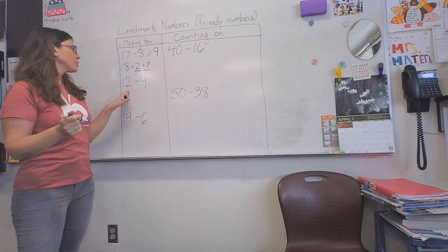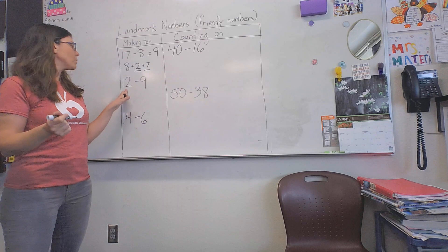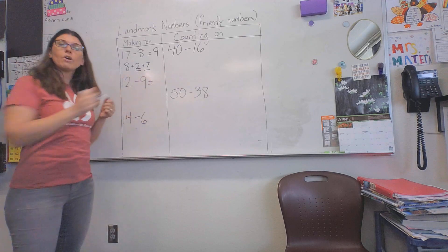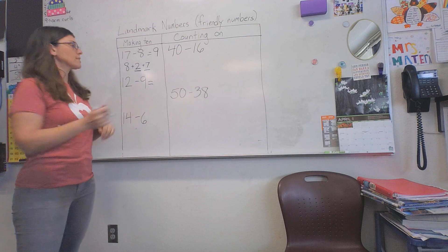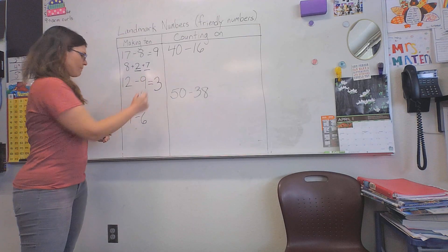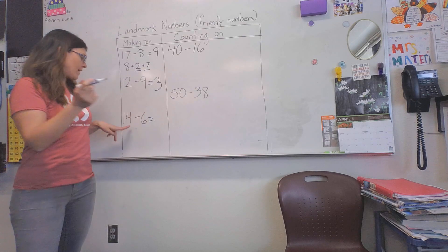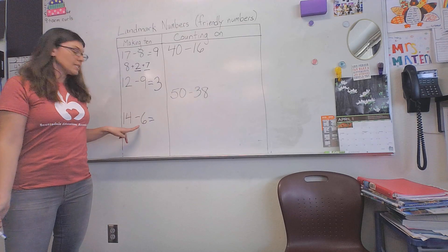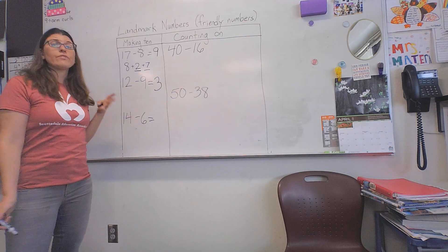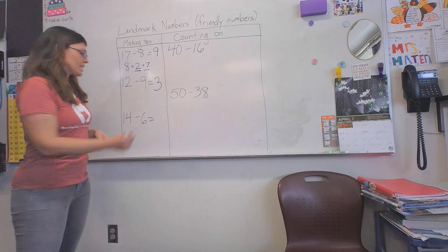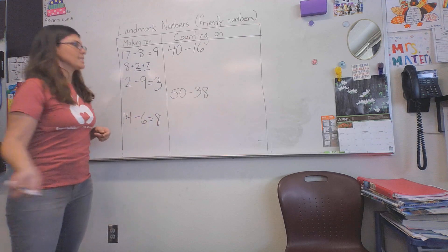The same thing is true here. Instead of counting backwards from 12 down to 9, they should know that 9 plus 1 gets to 10, and then 2 more gets to 12, which is 3. Finally, for 14 minus 6, they know to get from 6 to 10 is 4, and 10 plus 4 more gets to 14, so the difference is 8.